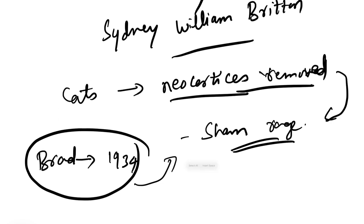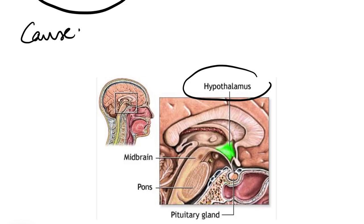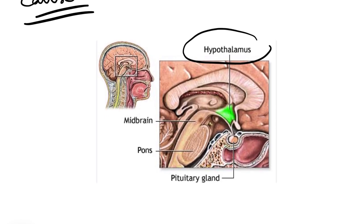Earlier it was thought that this type of rage or behavior was due to the removal of the neocortex, but later they found that subcortical structures like the hypothalamus and some structures in the spinal cord or the midbrain/brainstem control this behavior. The hypothalamus is one of the major structures involved in this mechanism.